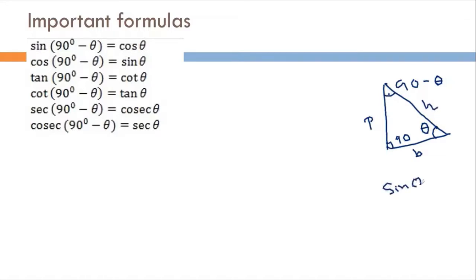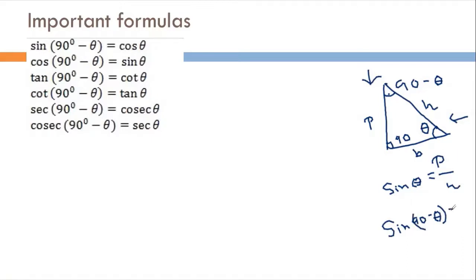If we consider sin theta, then sin theta is equal to p by h. Now, if we consider the angle alpha, which is 90 minus theta, then sin of alpha — that is sin(90 minus theta) — equals p by h, which equals b by h. And b by h is cos theta. So, sin(90 minus theta) equals cos theta, and cos(90 minus theta) equals sin theta.